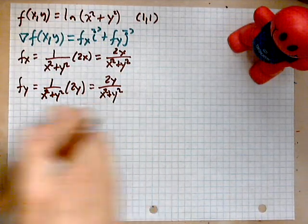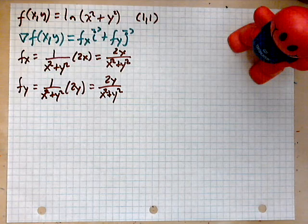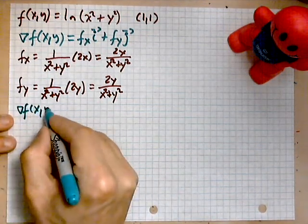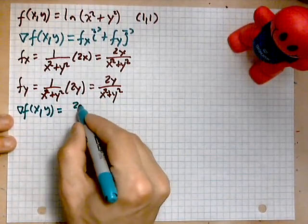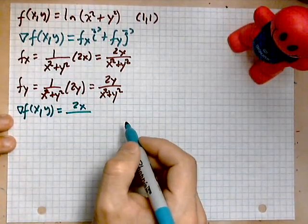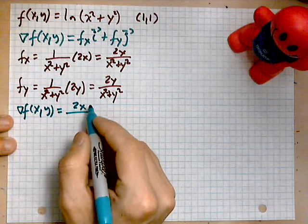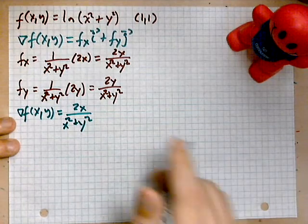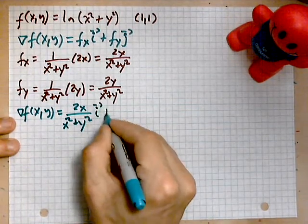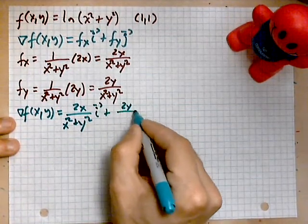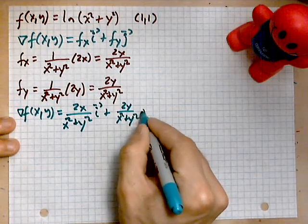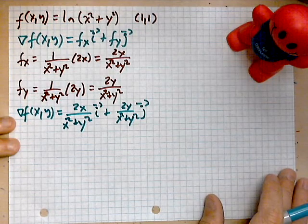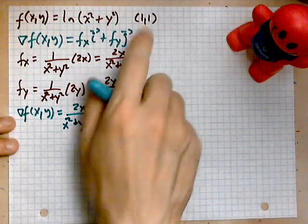So we have the gradient as a function of x and y is given by 2x over (x² + y²) in the i direction, and then 2y over (x² + y²) in the j direction.